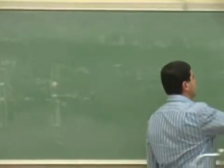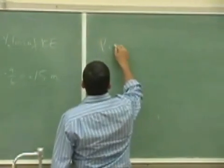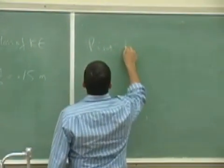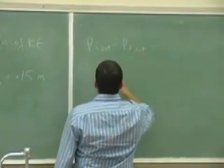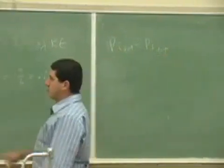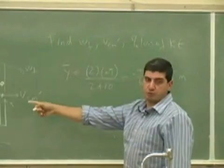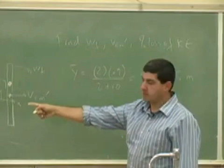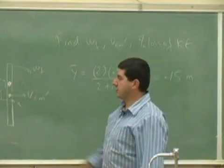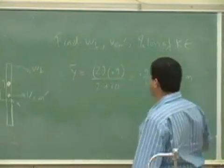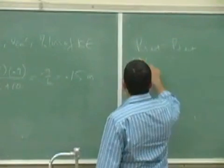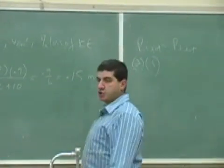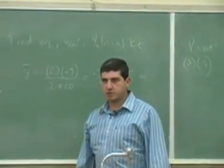So p initial total is equal to p final total. So p initial total, we're assuming the ruler was not moving at the beginning, only the 2 kilogram object was. So 2 times 3 is the initial momentum of the incoming object.